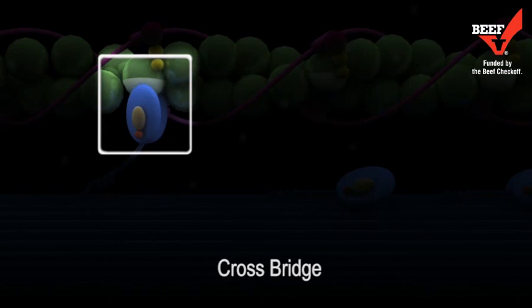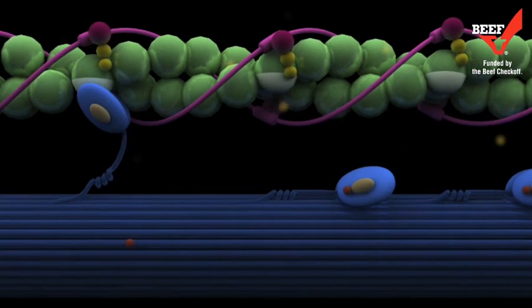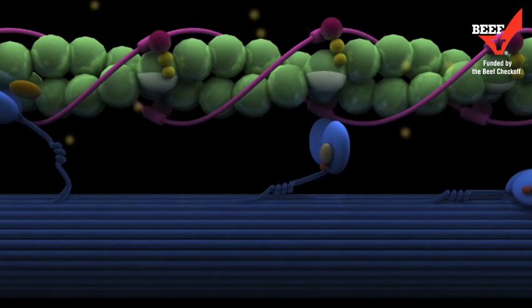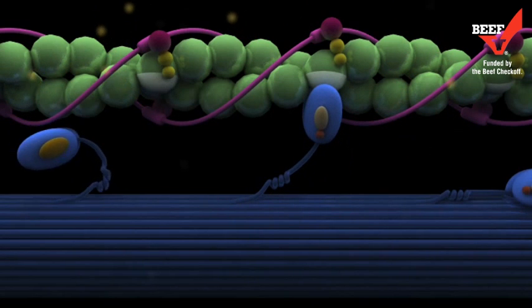The free phosphorus is released, causing the myosin head to change conformation, resulting in a power stroke or the sliding of muscle myofilaments.